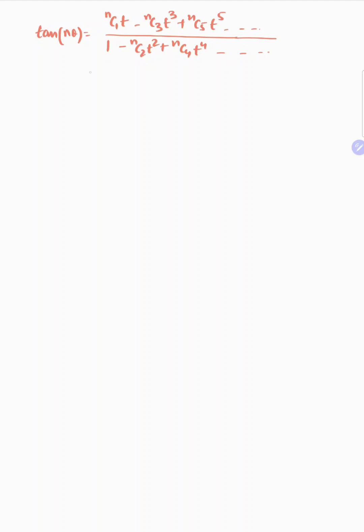What I want to do is: since we don't know the last term — whether it will end here or there, or whether it will end with a positive or negative sign — what I do is I will write t equals 1/x. That means x is equal to cot θ.